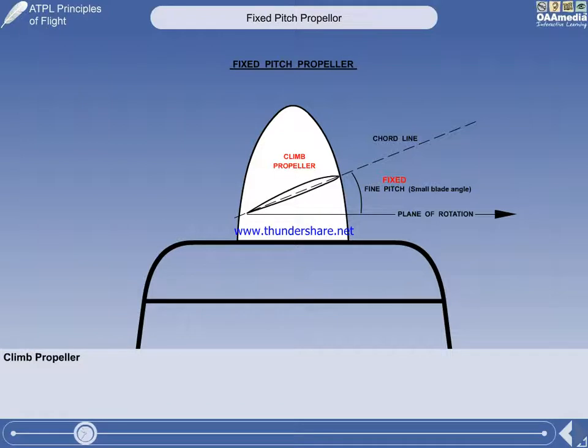As an example, an aircraft used exclusively for glider towing would be fitted with a climb propeller. A small blade angle is called fine-pitch.